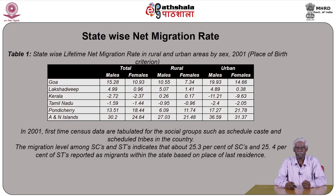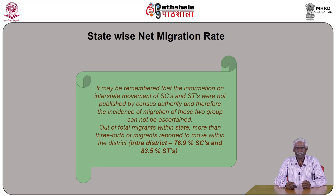In 2001, for the first time, census data were tabulated for social groups such as Scheduled Castes and Scheduled Tribes. The migration level indicates that about 25.3 percent of Scheduled Castes and 25.4 percent of Scheduled Tribes have reported as migrants within the state based on place of last residence. However, interstate movements of SC and ST were not published by census authorities. Out of total intra-state migrants, more than three-fourths — 76.9 percent among SCs and 83.5 percent among STs — reported intra-district movement.